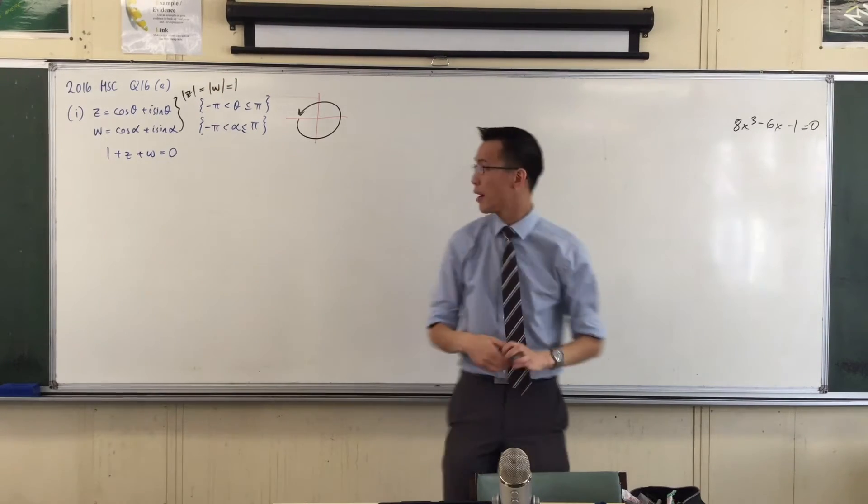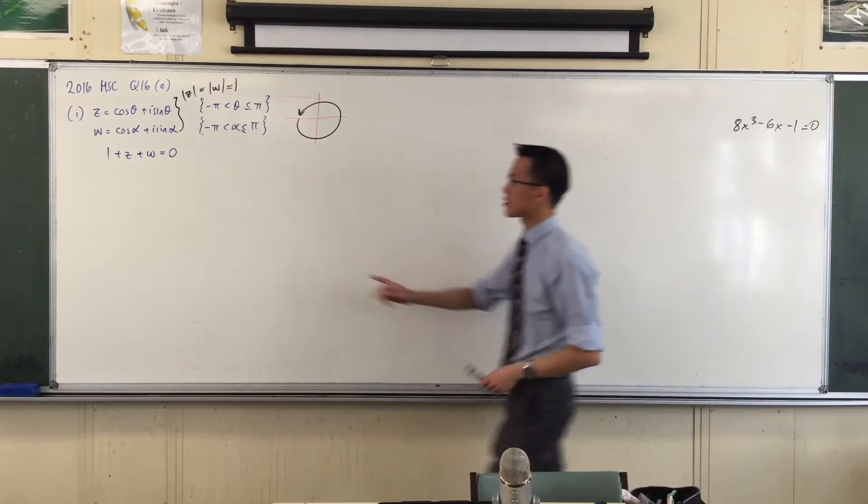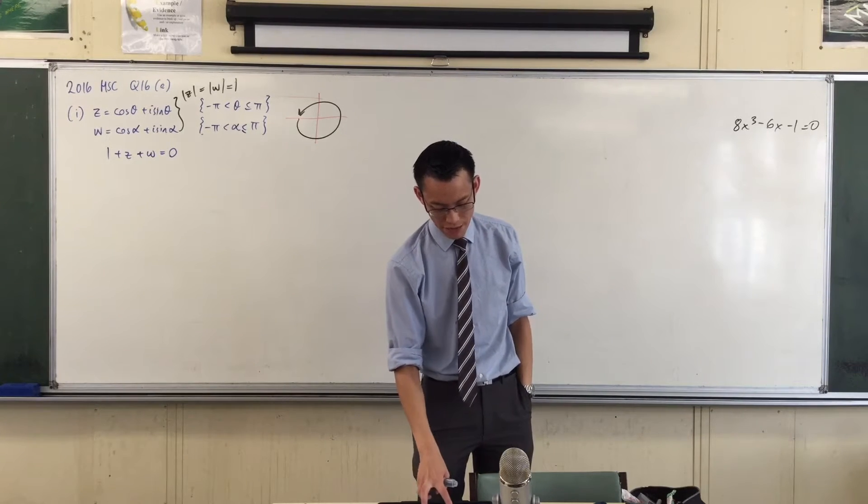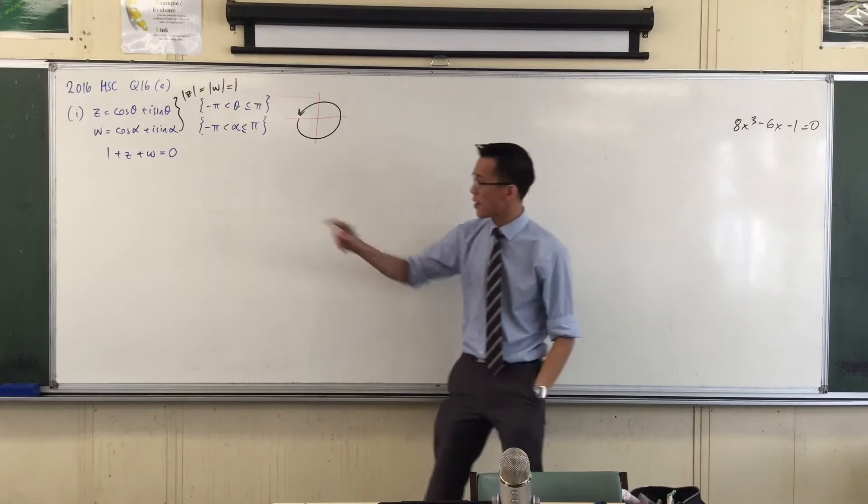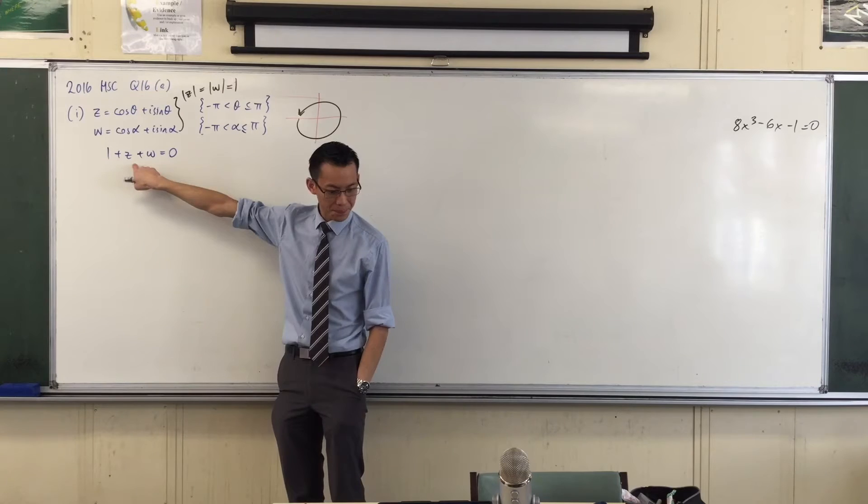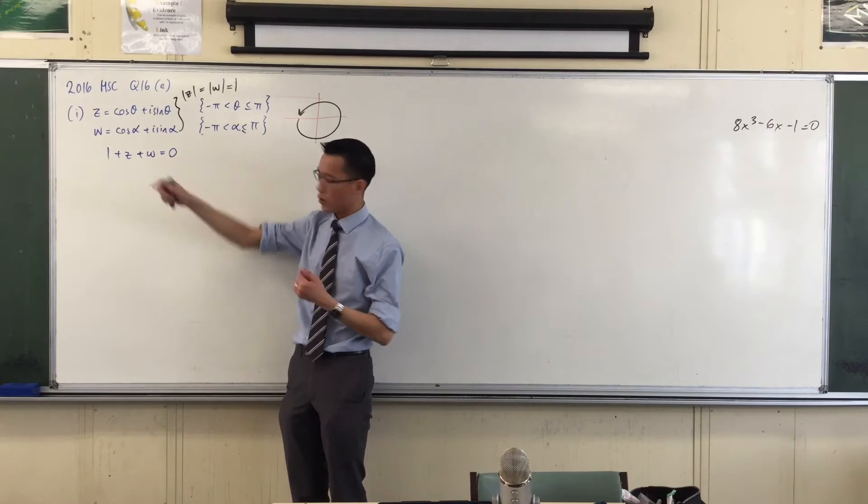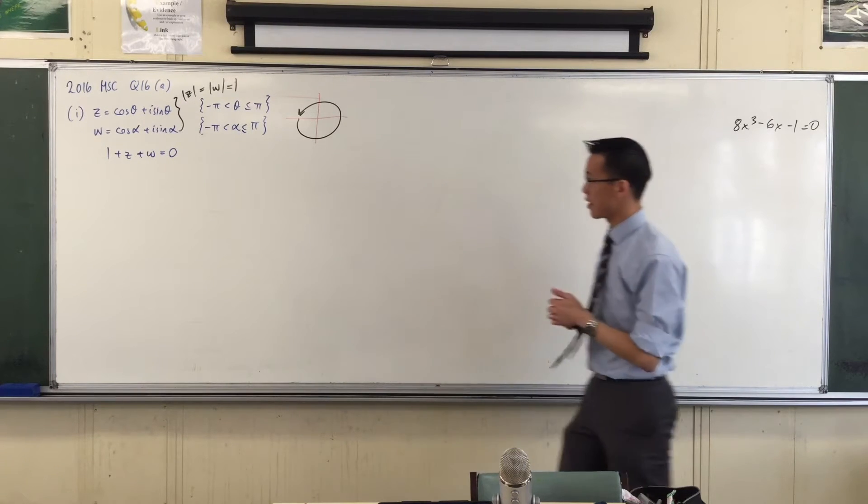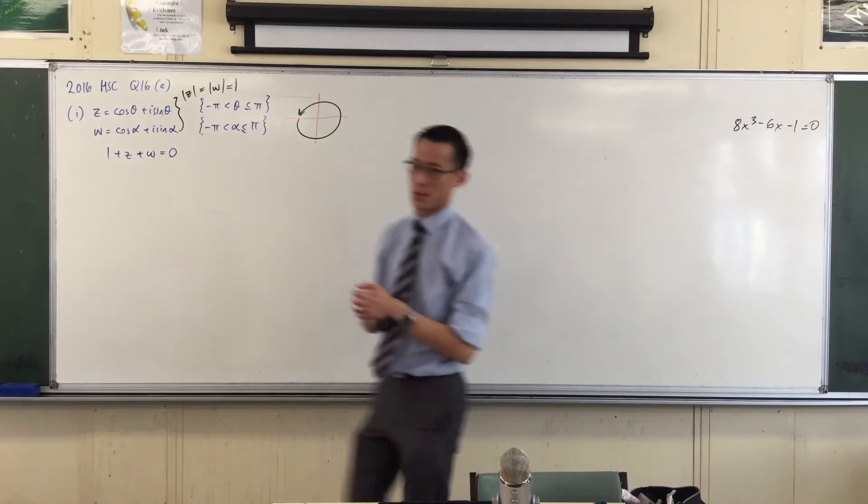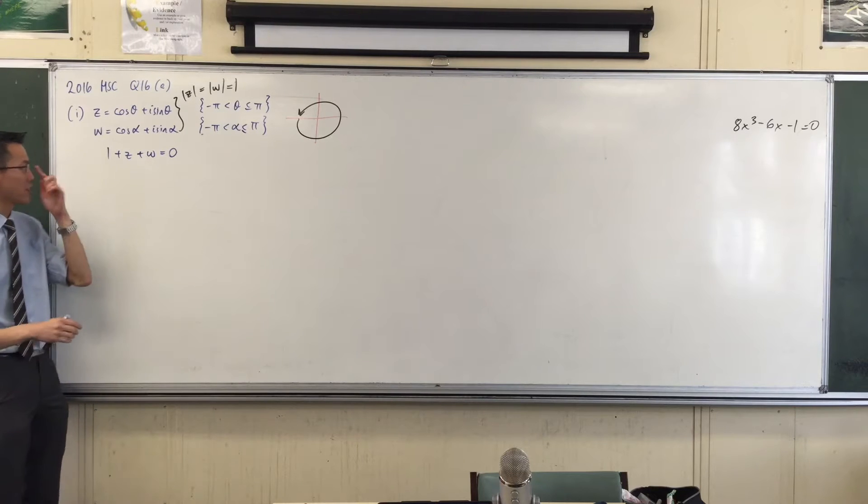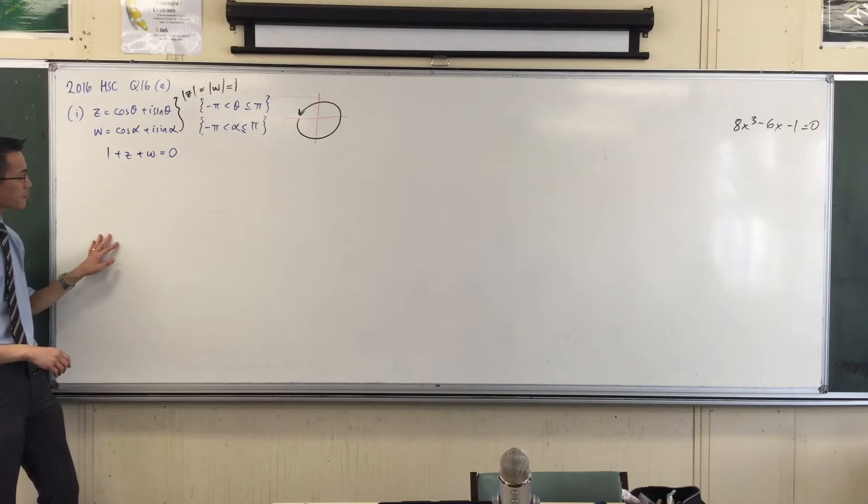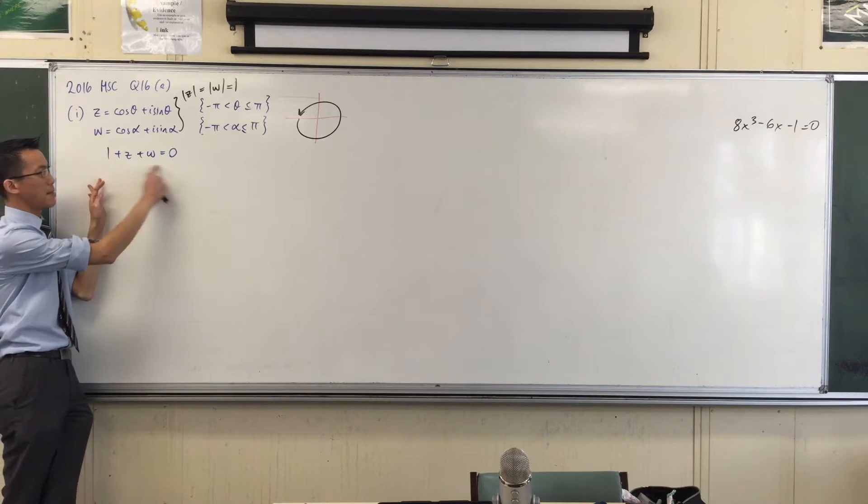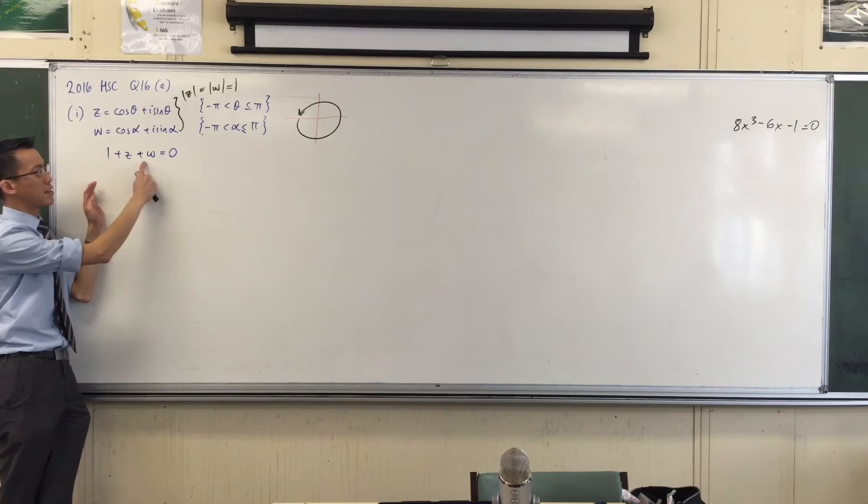What can we do with this? If you read the question, they try to nudge you in the right direction. They say 'by considering the real and imaginary parts of this, or otherwise, show that one, Z, and W form the vertices of an equilateral triangle in the Argand diagram.' Let's take their clue and look at this thing by taking the imaginary and real parts. We've been given an equation, so I can do more than just think about the imaginary part.